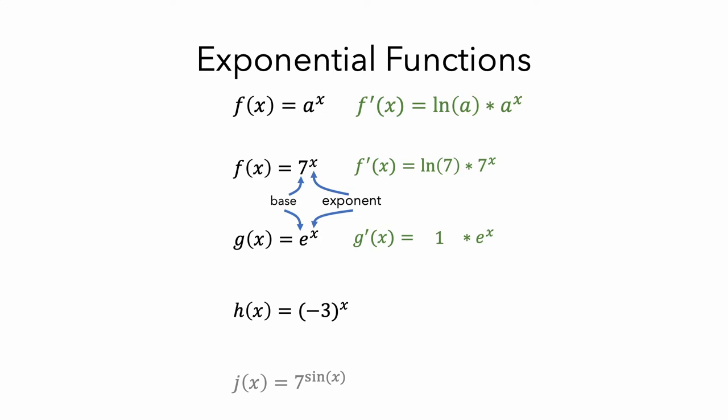If we look at h of x, it has a base of negative 3 and an exponent of x. But if you tried to use the rule to find the derivative of h of x, you'd run into trouble because the natural log of negative numbers isn't a real number. You can't use the rule with h of x. If we look at j of x, the base is a positive number; however, the exponent is sine of x, and our rule only applies when the exponent is just a variable, not another function.